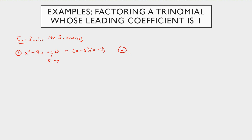Let's look at x squared minus 7x minus 18. The two numbers need to sum to a negative and multiply to a negative, so one must be positive and one negative. What about 9 and negative 2? But 9 plus negative 2 is positive 7, so it has to be negative 9 and 2. This factors into x minus 9 times x plus 2.